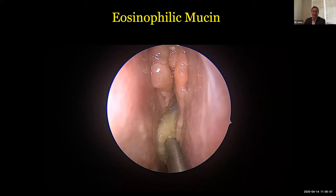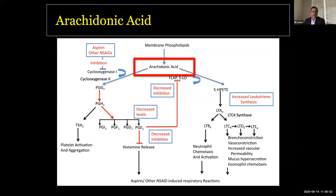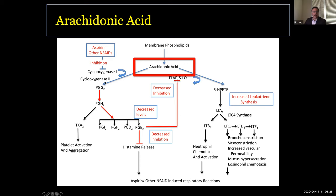Getting to the pathway, what we understand is deranged in these patients really centers on arachidonic acid — a figure we're all familiar with from medical school but that I think a lot of people lose track of. On the left side is predominantly anti-inflammatory prostaglandin production, which is what patients with AERD are absolutely dependent on. It's mediated by COX-1, which is constitutively expressed, and COX-2, which is slightly higher in men and increases with inflammation. If you stop this side of the pathway, you go toward a very pro-inflammatory leukotriene synthesis. It's kept tightly in balance in a normal state to regulate inflammation.